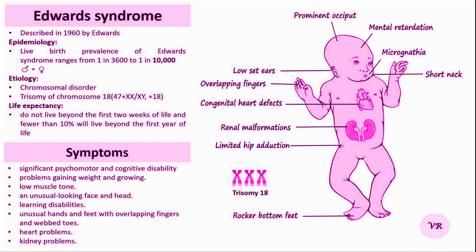The prevalence of Edwards Syndrome is relatively rare, but it is still one of the most common trisomies seen in newborns after Down Syndrome. Edwards Syndrome occurs in approximately 1 in 5,000 live births.